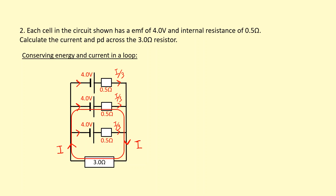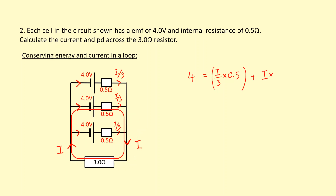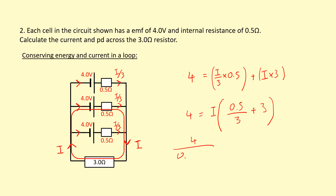Considering energy in one loop: when a charge goes through one cell it picks up 4 volts, and that energy must be used by the time it comes around. The lost PD across the internal resistance is (I/3) times 0.5. The rest of the energy is used across the load: I times 3. Taking I as common and setting total energy gained equal to total energy lost gives: 4 = I times (0.5/3 + 3).